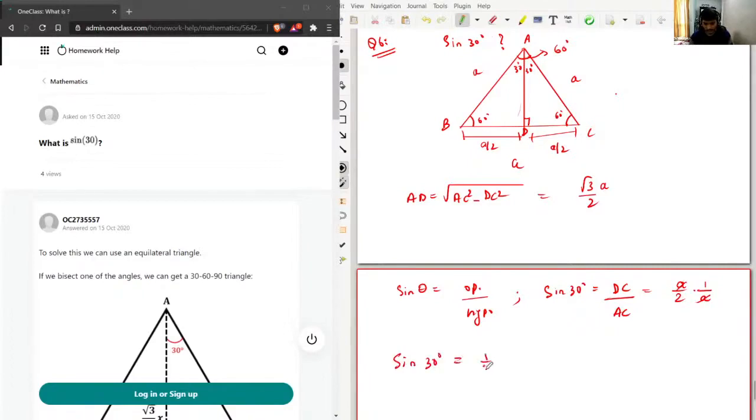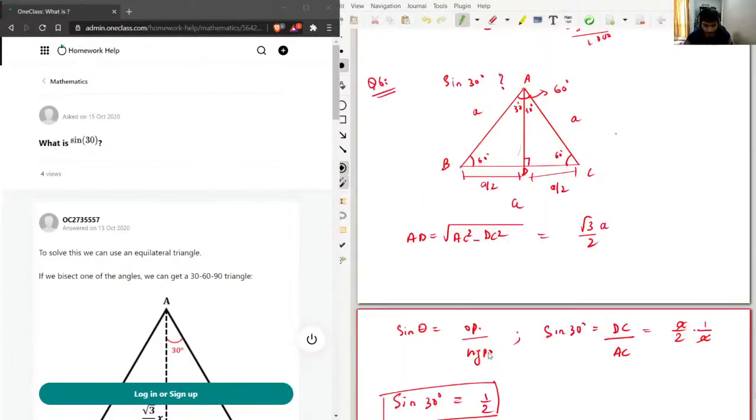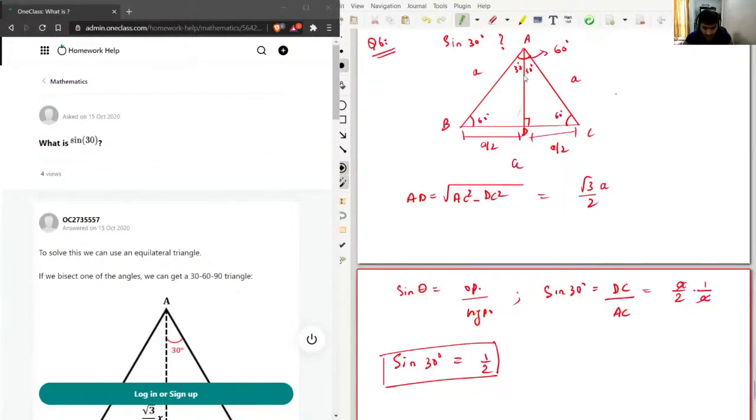We can also calculate cosine—it will be, I think, root 3 over 2—and we can calculate tangent, that will be 1 over root 3.